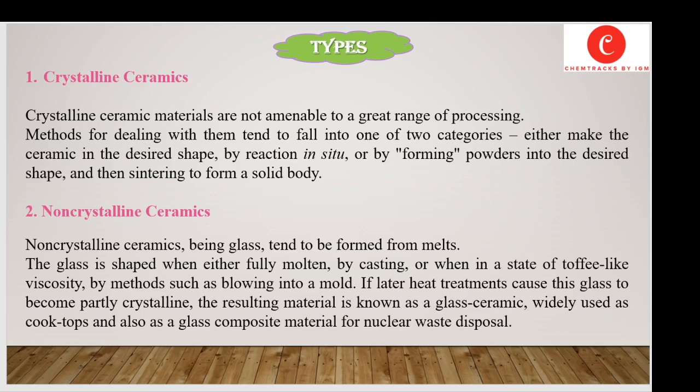There are two different types of ceramics: crystalline ceramics and non-crystalline ceramics. Crystalline ceramic materials are not amenable to a great range of processing methods. Methods for dealing with them tend to fall into one of two categories: either make the ceramic in the desired shape by reaction in situ — meaning within the lab — or by forming powders into a desired shape and then sintering to form a solid body.